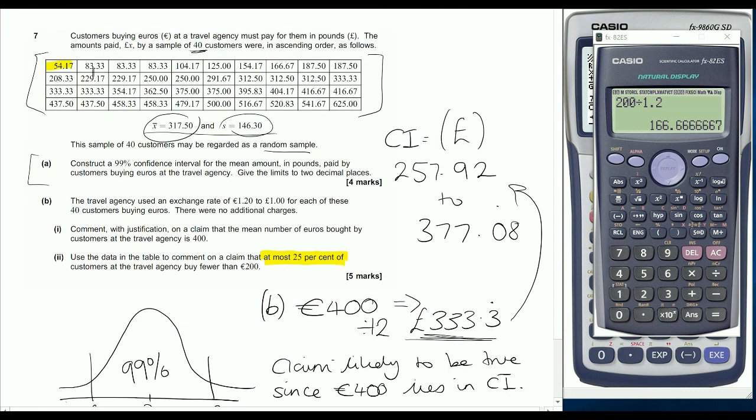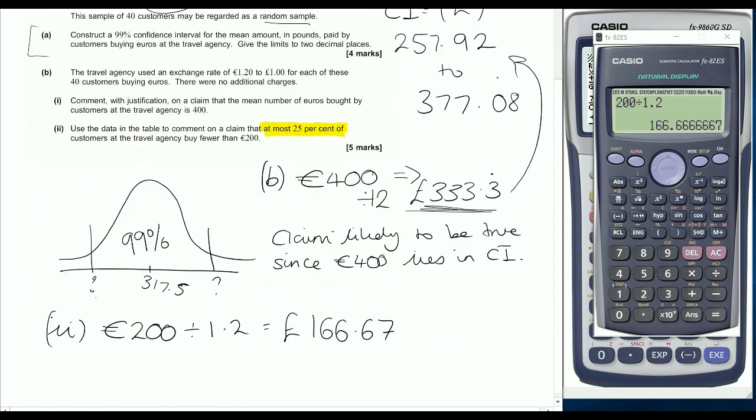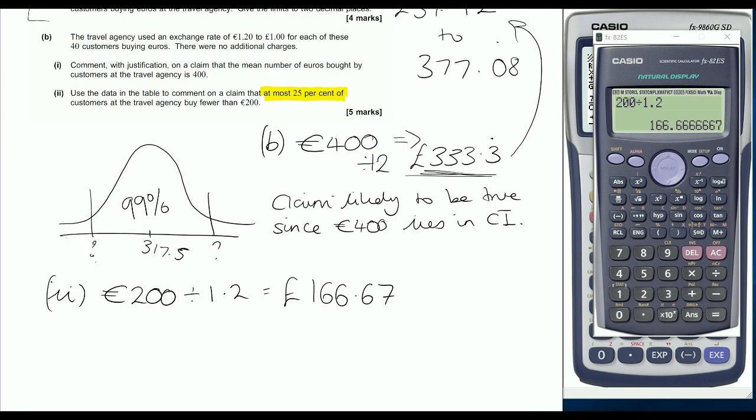How many values in the table are at most 166.67? So we've got 1, 2, 3, 4, 5, 6, 7 values. It's not including 25%, so I wouldn't count the 166.6. If you do, you don't actually lose marks in the mark scheme. So we're saying that 7 values out of 40 are less than 25%.